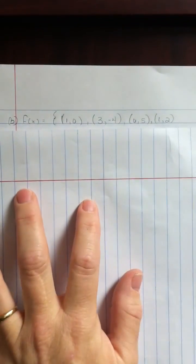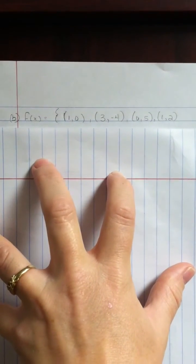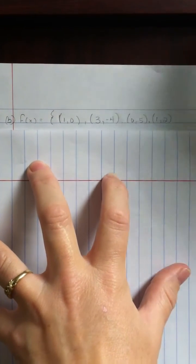The second problem has the numbers f(x): (1, 0), (3, -4), (0, 5), and (1, 2).